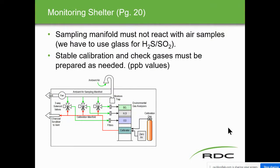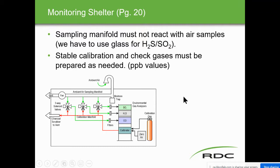The sample shelter contains sample manifolds taking samples to different analyzers: one for SO2, one for H2S, one for CO, with calibration gas going through to calibrate each one. The sampling manifold must not react with the air samples — we have to use glass for H2S and SO2. Sample calibrations and check gases must be prepared as needed, depending on our sampling system.